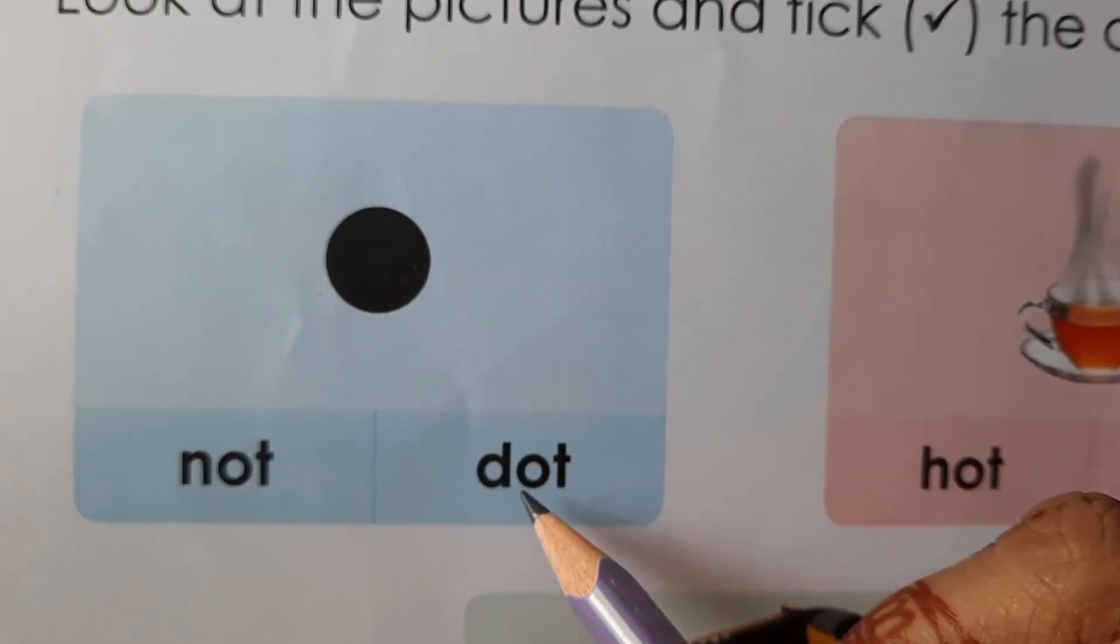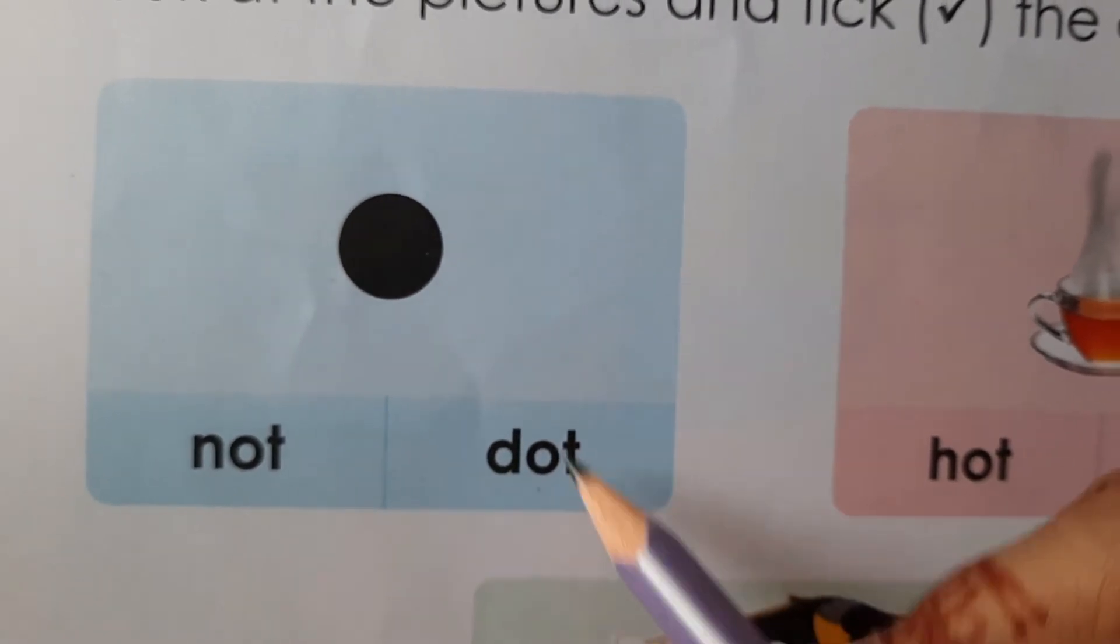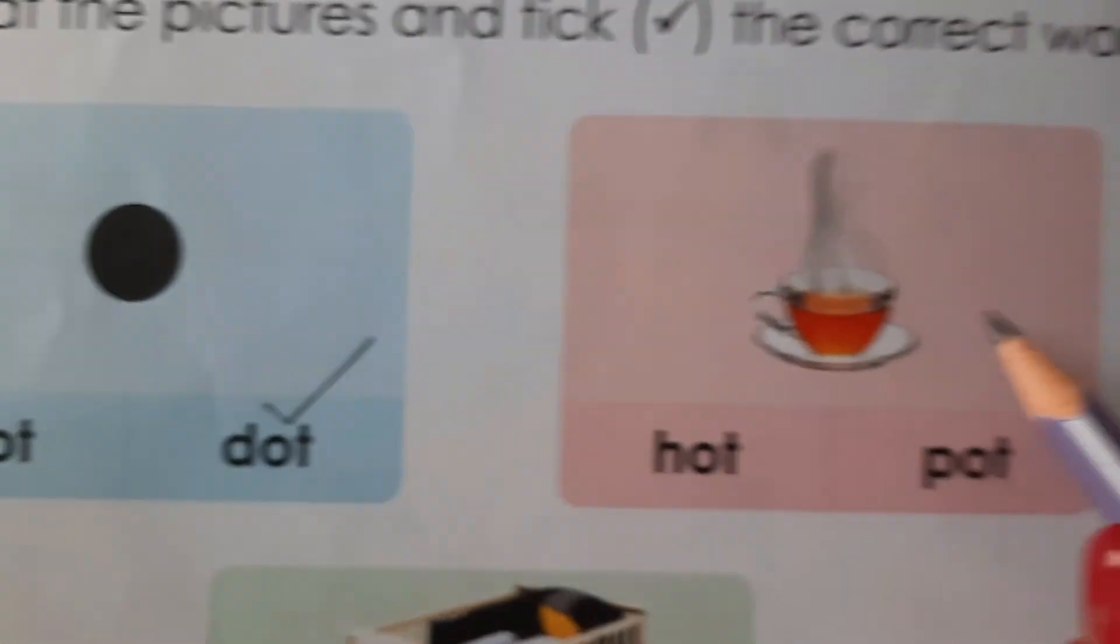Next, what do you see? Is it 'hot' or 'pot'? This is hot. H-o-t. Hot. So you will tick over here.